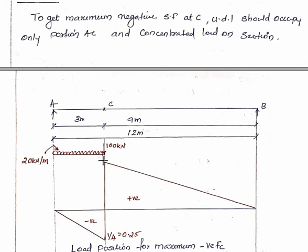Maximum negative shear force equals 100 times 0.25 plus the uniformly distributed load contribution. For UDL, multiply intensity of load by area of influence line diagram under load. This gives 20 times 1/2 times 3 times 0.25.